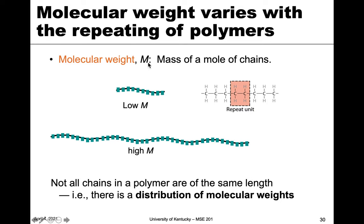The molecular weight is essentially the mass of the molecule, and that's dependent on the length of the chain. A short chain will have a low molecular weight and a longer chain will have a higher molecular weight. Not all chains in a polymer will have the same length, so we typically think about a distribution of molecular weights in a given polymer sample.